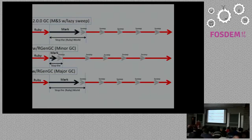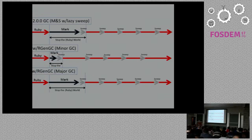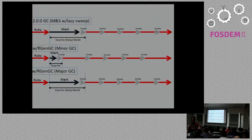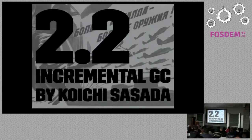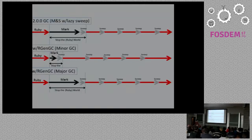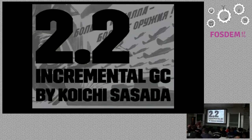That means we have shorter pause times on average, so we're less likely to have a big GC pause during a request. We still have them though with major GCs — those are still the same as they were in 2.0. So we still have this problem of long major GC mark phases. We'll fix that with incremental GC in 2.2.